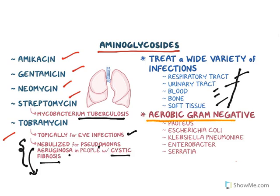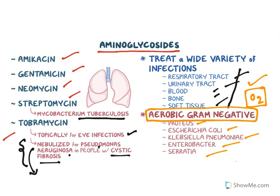Aminoglycosides are specifically effective against aerobic gram-negative organisms. The reason is that in the presence of oxygen, aminoglycosides get into the bacterial cell — and unless they get inside, they cannot inhibit protein synthesis. They need oxygen to enter the bacterial cell, making them ineffective against anaerobes. They can be used to treat Proteus, Escherichia coli, Klebsiella pneumoniae, Enterobacter, and Serratia infections.